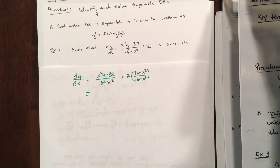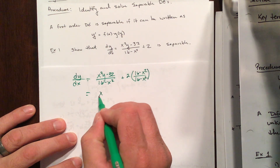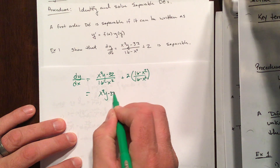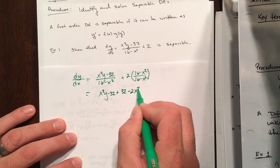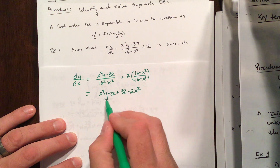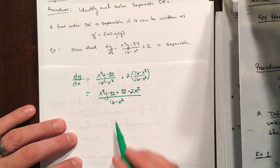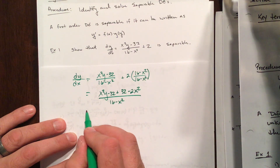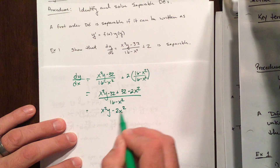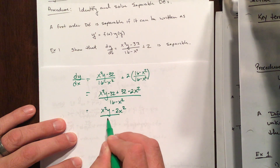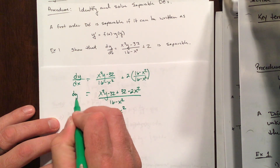Let's get a common denominator. We have x squared y minus 32 plus 32 minus 2x squared, all divided by 16 minus x squared. The 32s cancel, leaving x squared y minus 2x squared over 16 minus x squared. This is all equal to dy/dx.